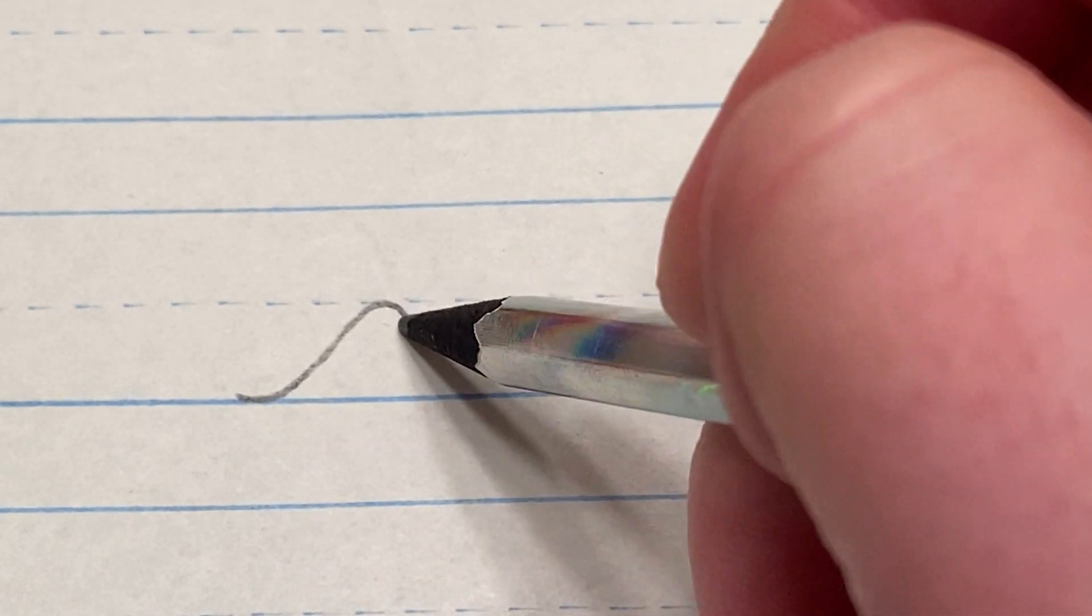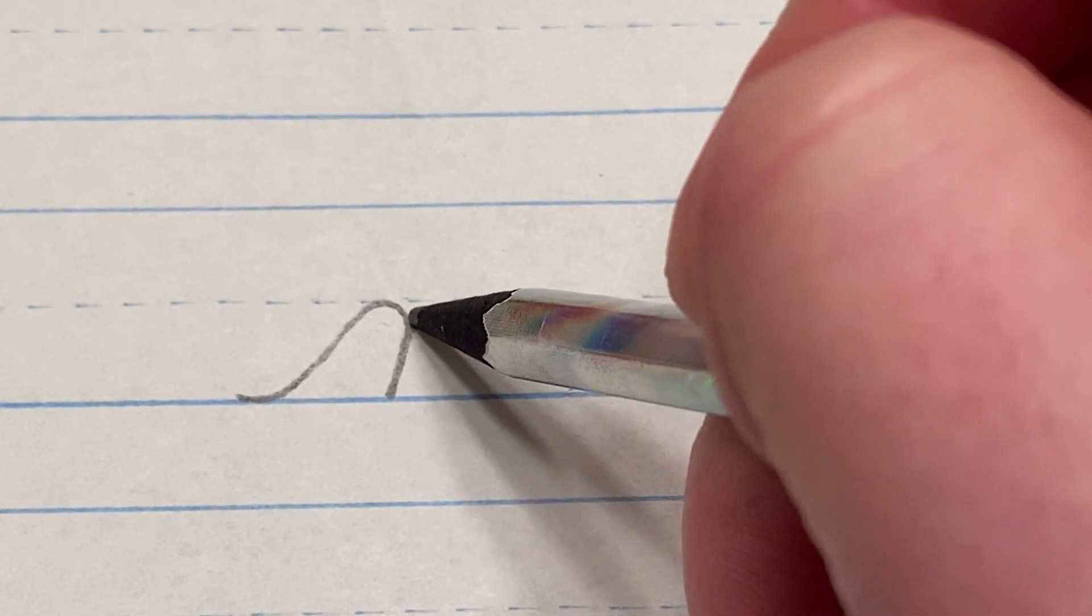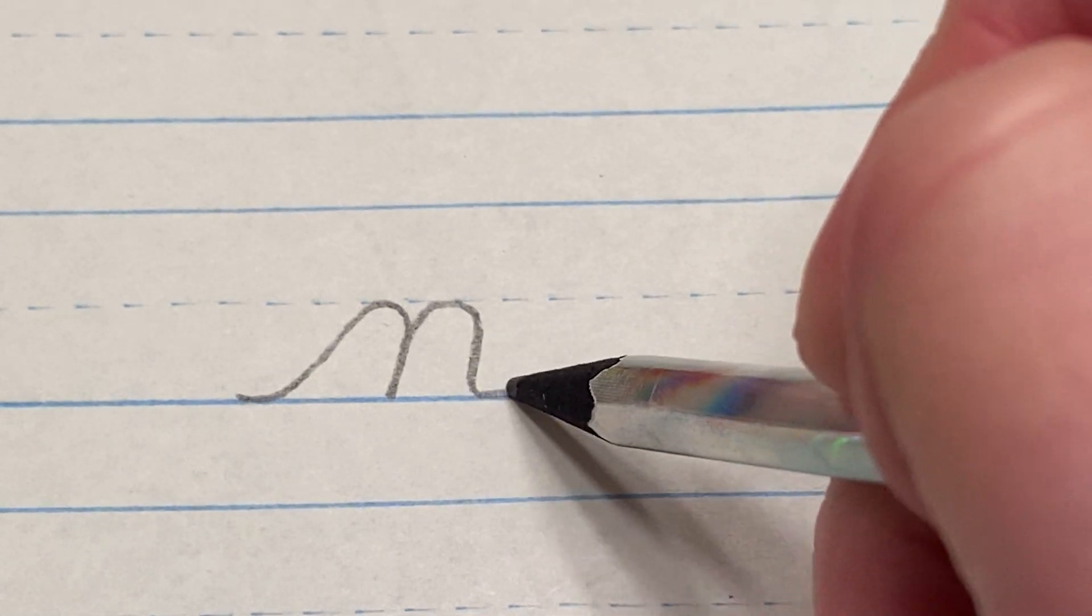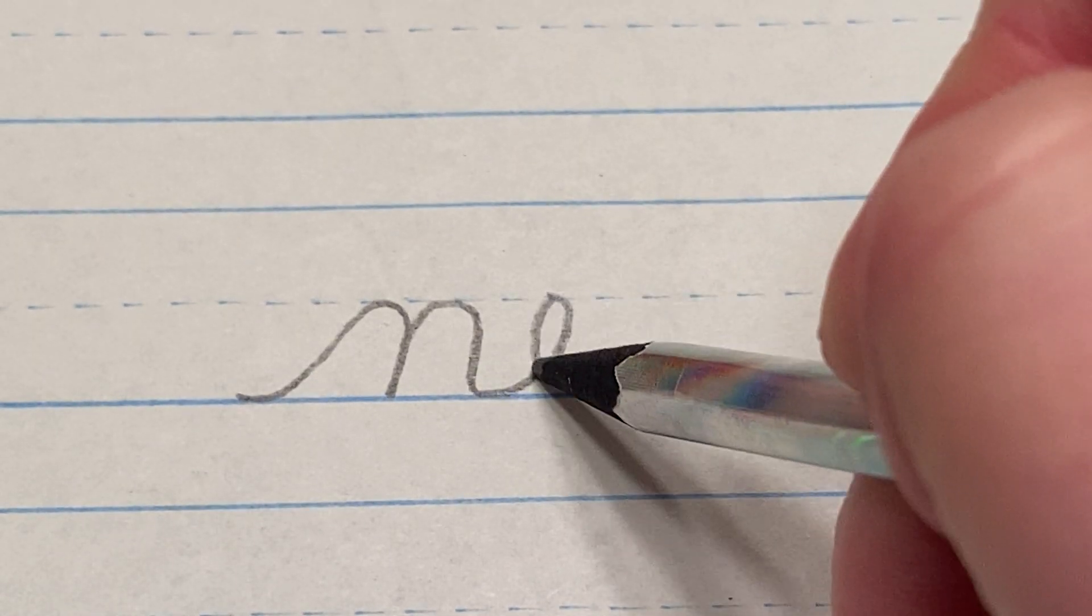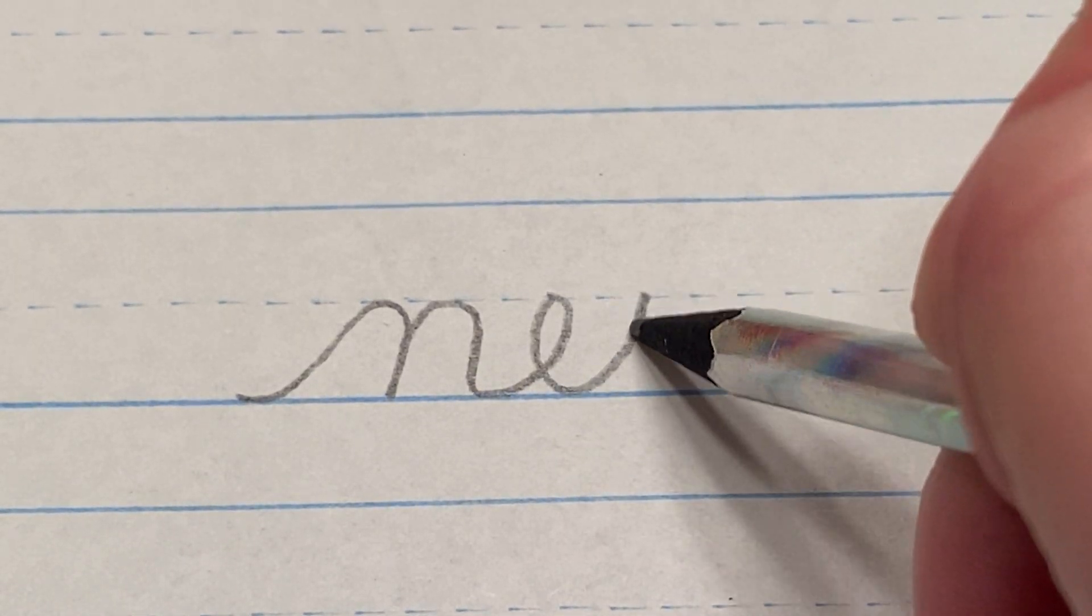For this word, you start down at the floor, up, down, second one, and go straight into the E, and then go straight into the W.